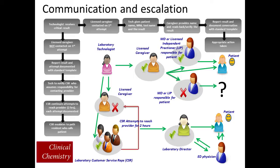This slide demonstrates one lab's process for communicating a critical test result and the escalation plan if they are unsuccessful. The protocol needs to be clear with respect to whom to call, when to call, and how to escalate if a provider is unavailable. Laboratories should recognize that simply making a call to a licensed provider isn't necessarily ensuring that the loop is closed and that the patient will be treated accordingly. For this reason, laboratories should assist the clinical areas with monitoring how effective the entire communication plan is at closing the loop — for example, periodically sending the clinical areas the previous day's critical results as a way to audit the success of the process. This can be especially helpful in reviewing textual results that may be difficult to flag electronically as critical.